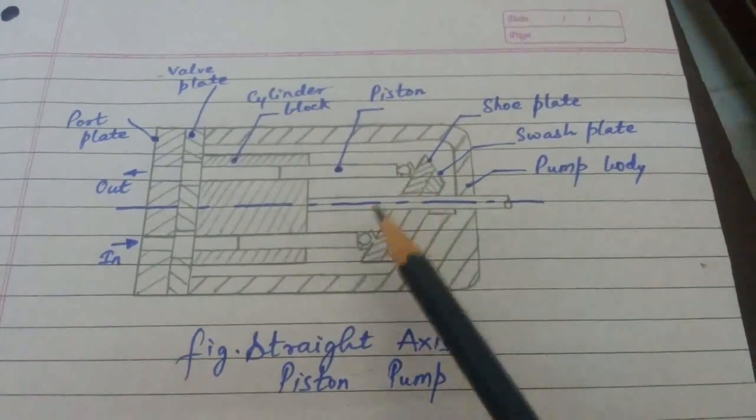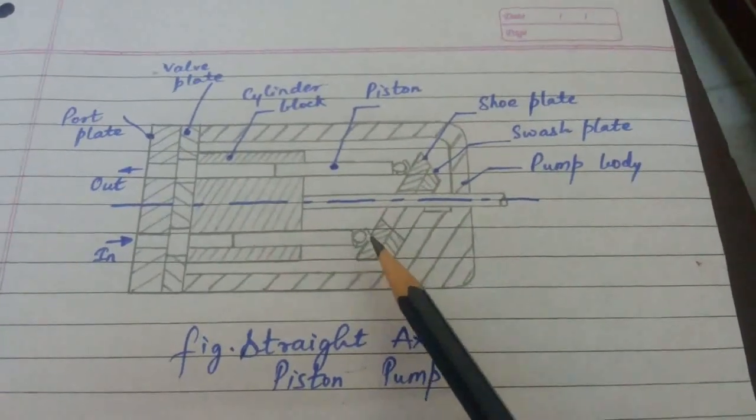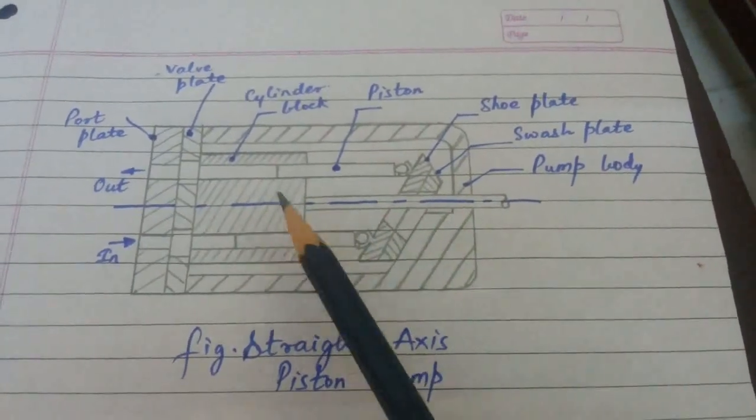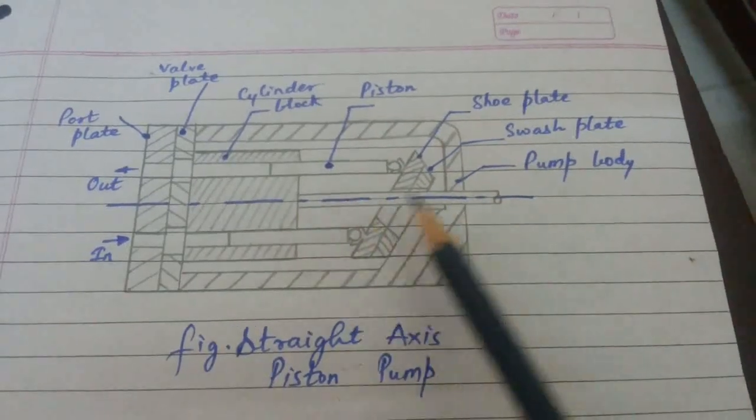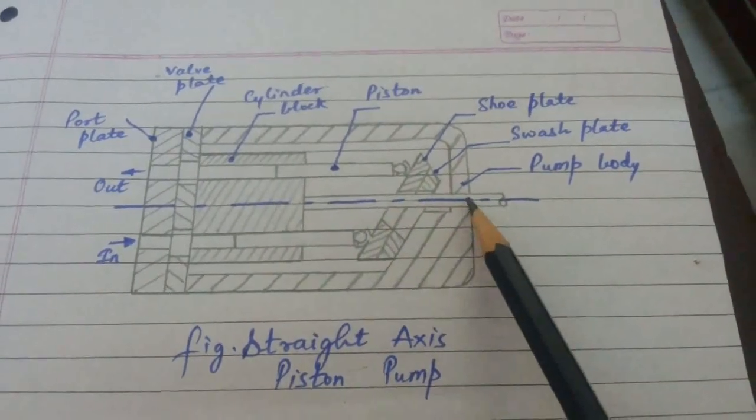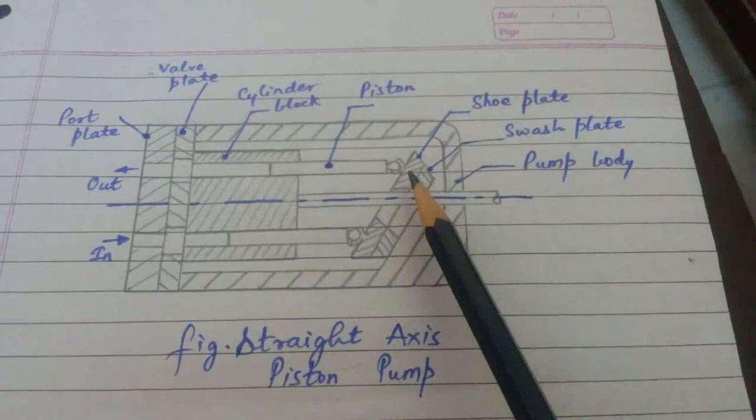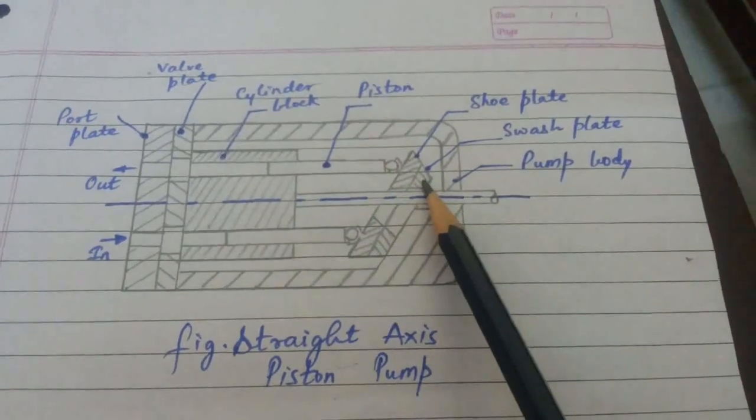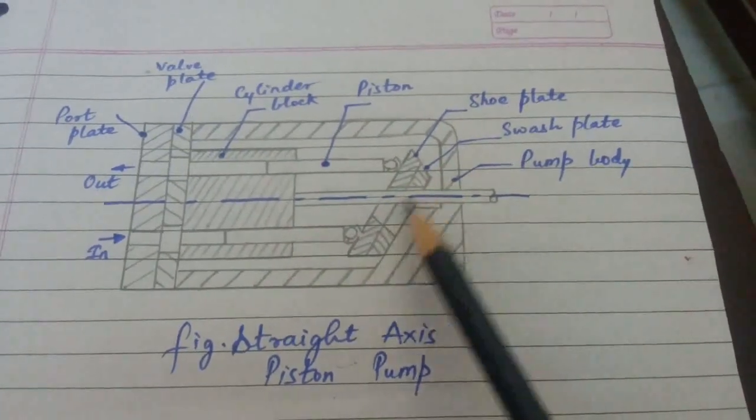And this is shoe joint. And this is cylindrical block. It is attached to the drive shaft.